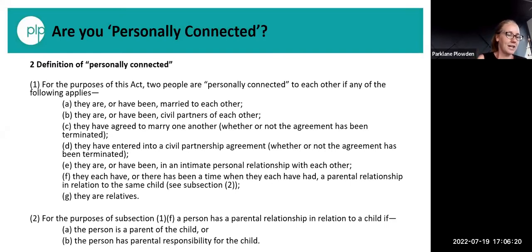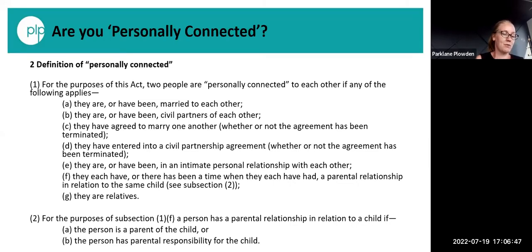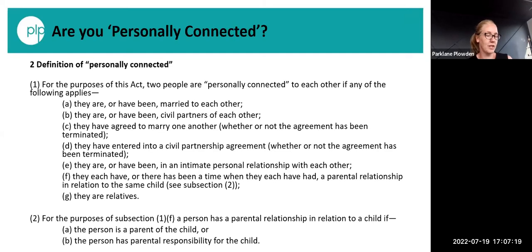The definition of 'personally connected' is very wide and very similar to the associated persons definition from the Family Law Act. It can cover a number of categories. When it defines 'relative' under subsection G, it includes father, mother, stepfather, stepmother, son, daughter, stepson, stepdaughter, grandma, grandfather, grandson, granddaughter, or that person's spouse, former spouse, civil partner or former civil partner. It also includes brother, sister, uncle, aunt, niece, nephew, and first cousin, whether by full or half-blood or by marriage or civil partnership. It's a very wide definition.